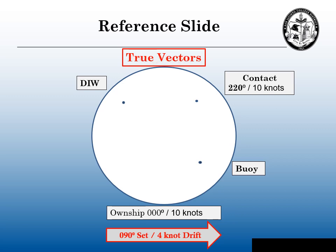We'll be using true vectors. On an ARPA, simply toggle between relative vectors and true vectors and set your vector length. On a graphic display, like a plotting sheet, you will be using the E to R for our own ship's course and speed, and the E to M for the contact's course and speed.